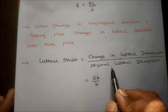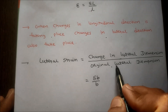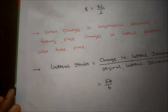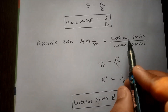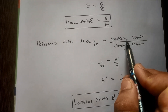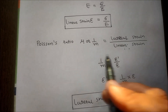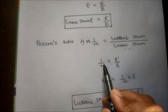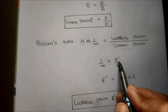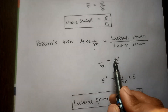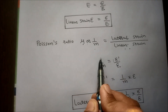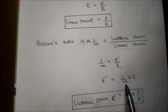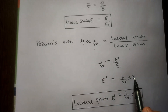The nature of changes in the lateral direction are exactly opposite to that of changes in the longitudinal direction. So Poisson's Ratio is defined as the ratio of lateral strain to linear strain. The symbol of Poisson's Ratio is mu or 1 by m. So mu or 1/m equals lateral strain divided by linear strain. Therefore, lateral strain equals Poisson's Ratio multiplied by linear strain, which is (1/m) multiplied by linear strain.